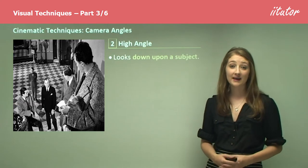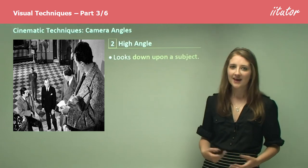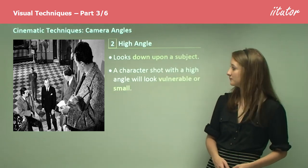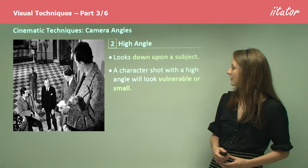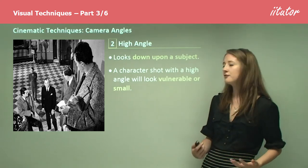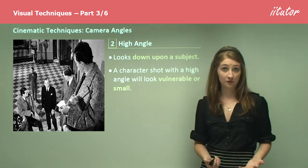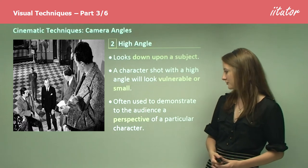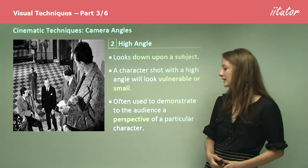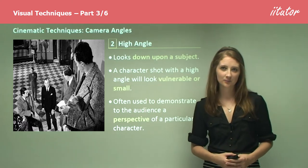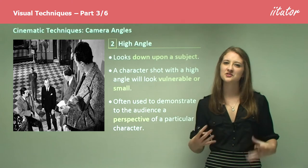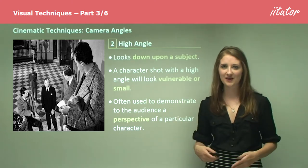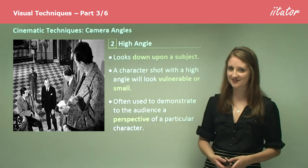We then get the concept of the high angle, which looks down upon a subject. A character shot with a high angle will look vulnerable or small. This is often used to demonstrate to the audience the perspective of a particular character and to show status — whether things are positioned up high or down low.